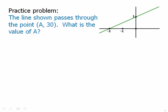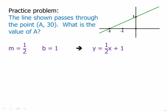The line shown passes through the point (a, 30). What is the value of a? It's very easy to read off this graph the value of the y-intercept — the y-intercept is 1. And the slope: since it goes through negative two, we have a run of two and a rise of one, so rise over run is one-half. So the slope is one-half and the y-intercept is one, which means the equation of the line is y = (1/2)x + 1.